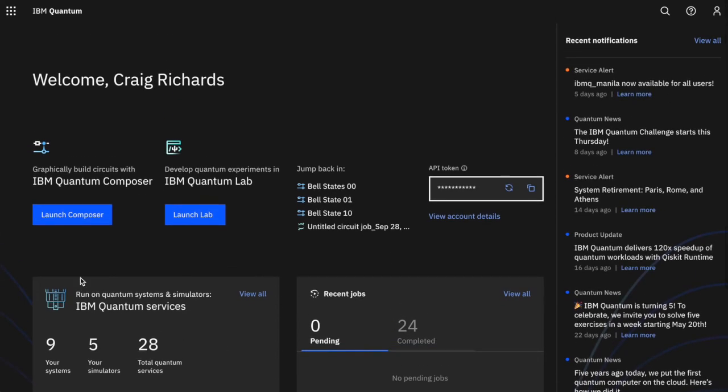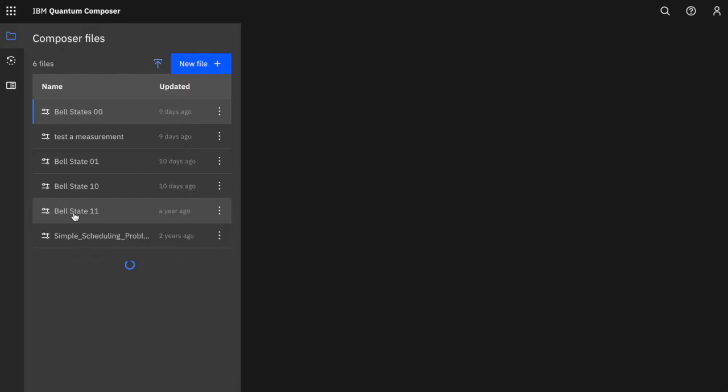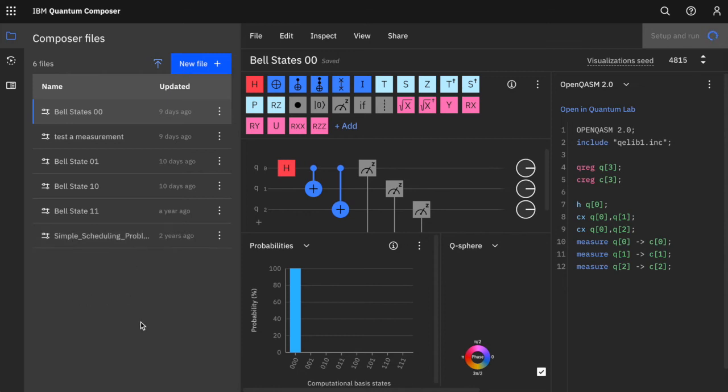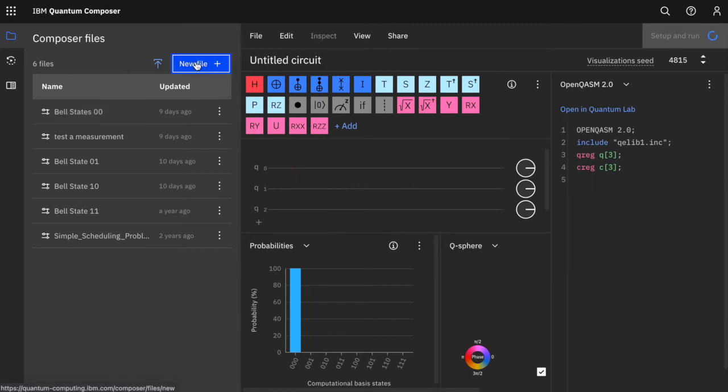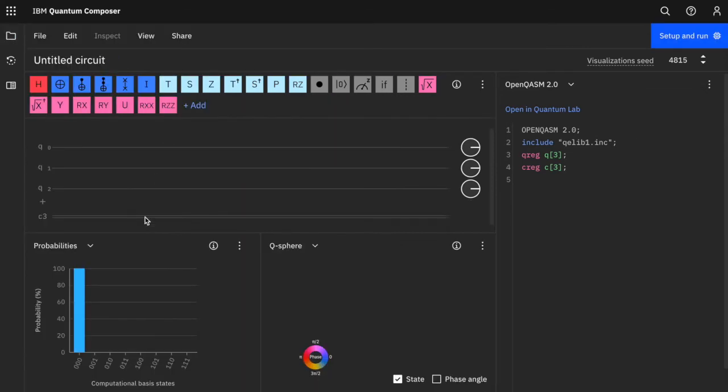So let's launch the Composer. For our quantum hello world we'll create a new file. And let's have a look around the Composer. So across the top here are all of the quantum gates that are available to us. We've already been introduced to the Hadamard gate, the H gate, which puts our qubit into a superposition state. This is the X gate or the NOT gate. And this is the CNOT gate.